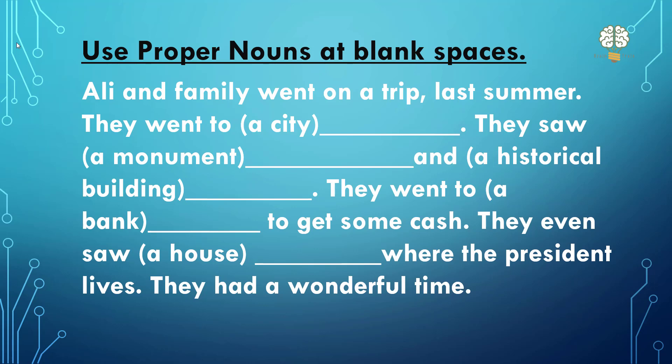Next. This is a slightly different exercise — I hope you will understand. There are some blank spaces here. You have to write in the blanks what is given in brackets. For example, you can see: a city, a historical building, a bank, a house. You have to provide proper nouns — a name for a city, a monument, a historical building, the name of a bank, and the name of a house. Ali and family went on a trip last summer. They went to a city — write the name of the city. They saw a monument and a historical building — write the name. They went to a bank to get some cash — write the name of the bank. They even saw a house where the president lives — what is the name of that house?